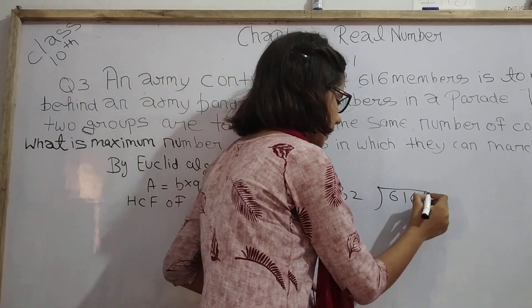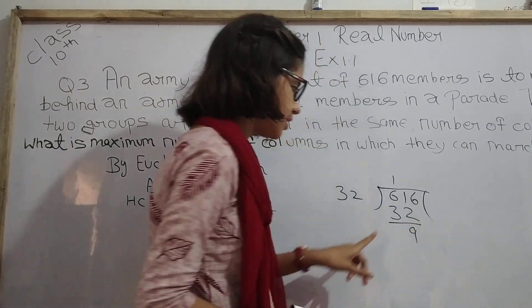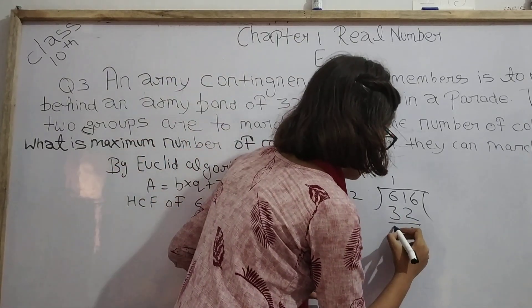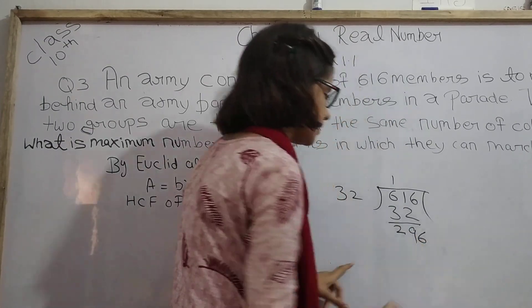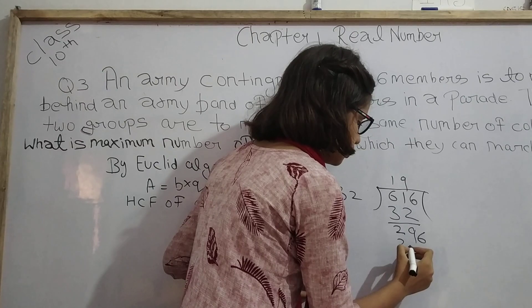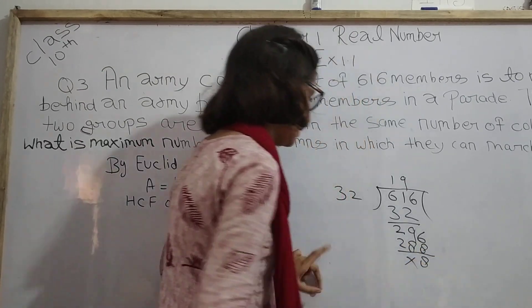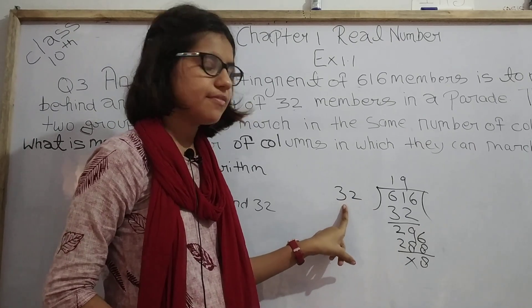Now we divide by 9 times, which is 288. Here 8 will be left and nothing. Now 32 was the divisor; when it comes here it will be the dividend. So now we divide it by 4 times into 32.